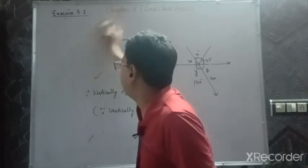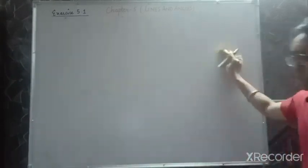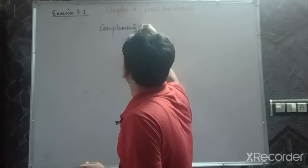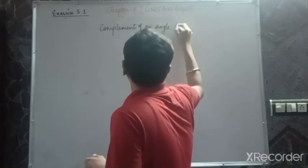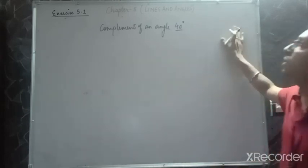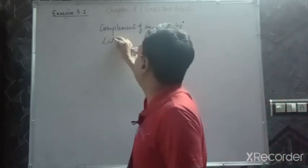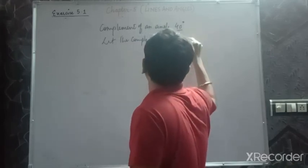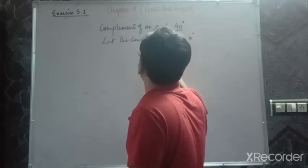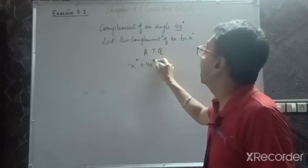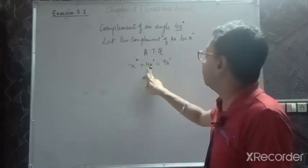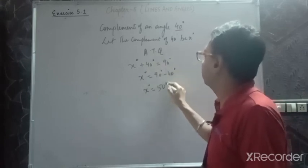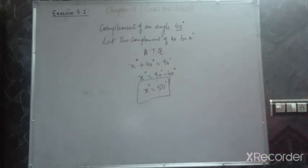Now let's look at examples of complementary and supplementary angles — how to find the complement and supplement of an angle. For example, what is the complement of 40°? Let the complement of 40° be x°. According to the definition of complementary angles, the sum of two angles must be 90°. So x° + 40° = 90°, therefore x° = 50°. So 50° is the complement of 40°.